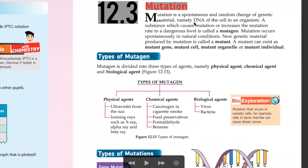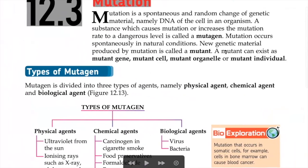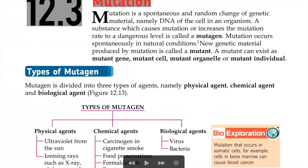Mutation is a spontaneous and random change of a specific genetic material, namely DNA, of the cell in an organism. It means that mutation is a process where it will alter or change the genetic content in our DNA. The one that causes the mutation is called mutagen — a substance which causes mutation.